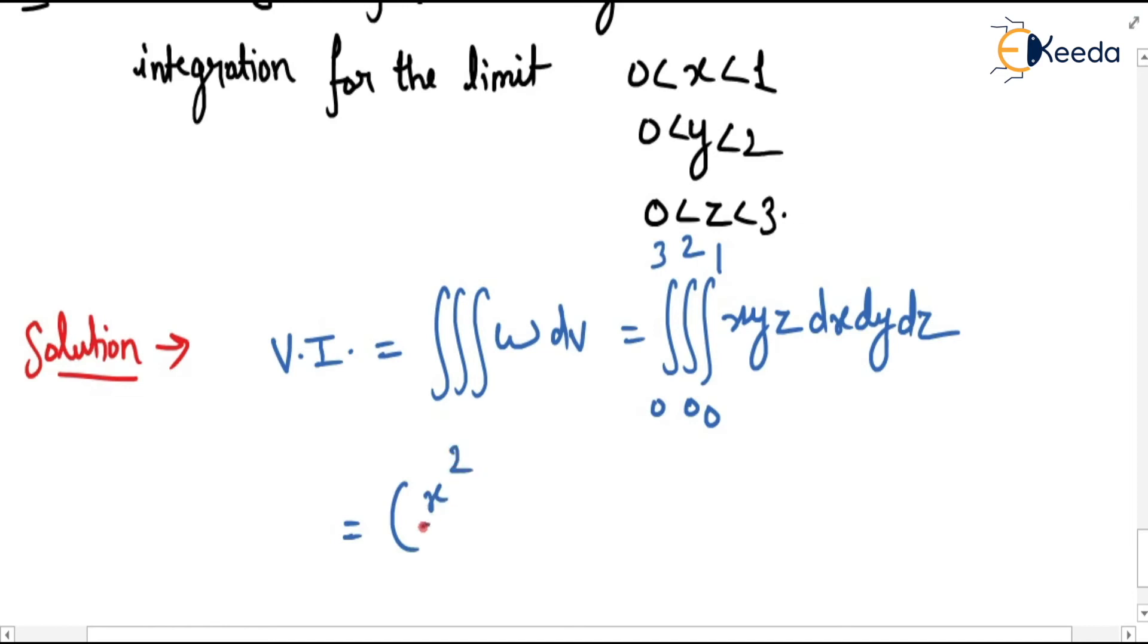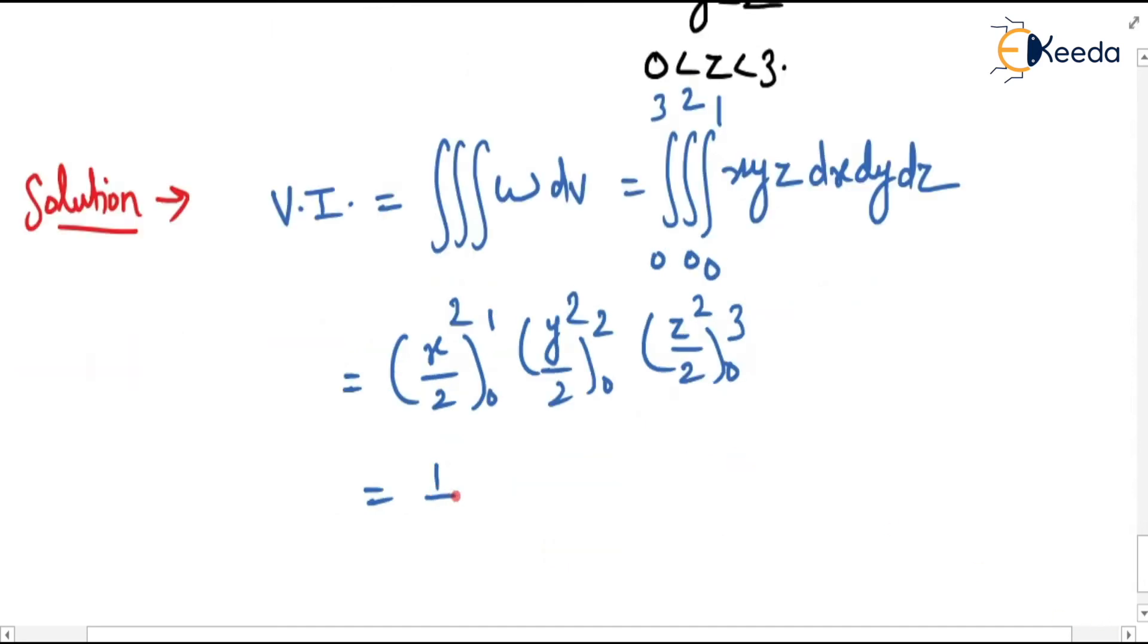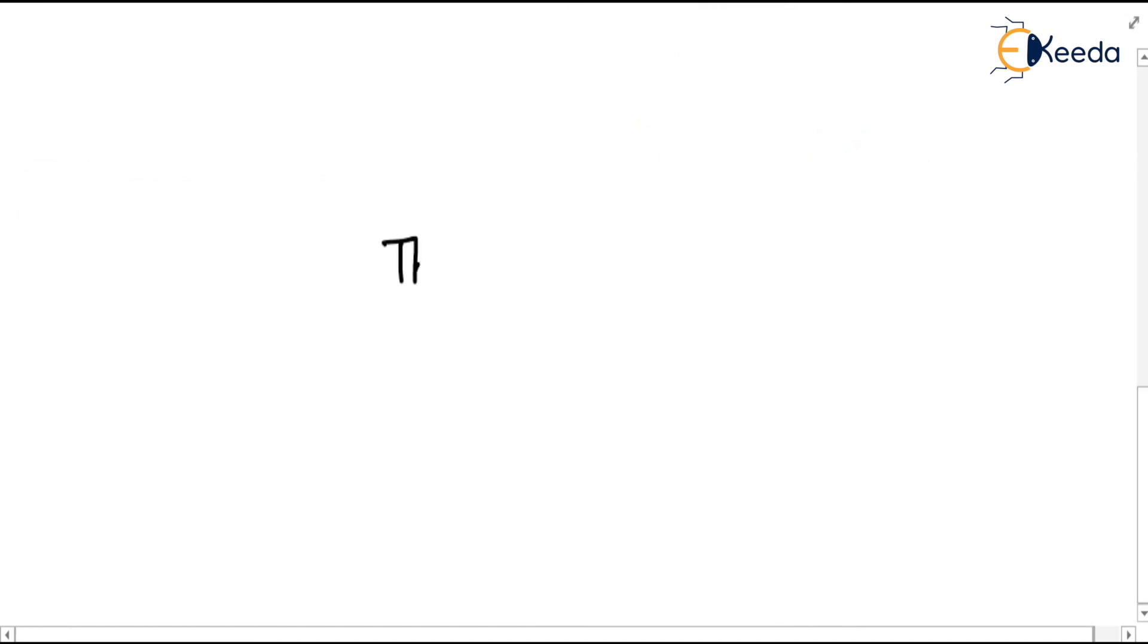So this answer is x squared by 2 from 0 to 1, y squared by 2 from 0 to 2, z squared by 2 from 0 to 3. So this answer is x, z x, y, 2x.